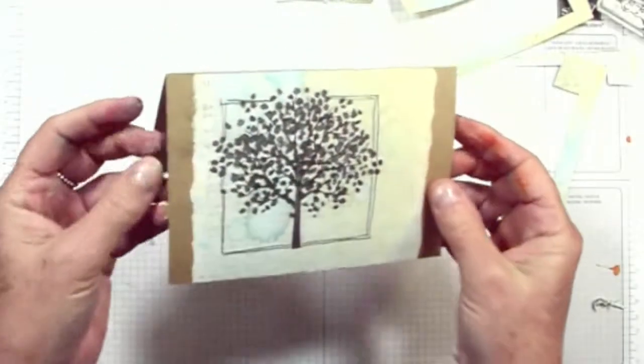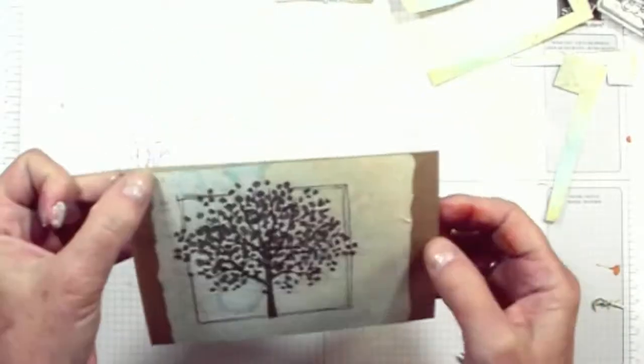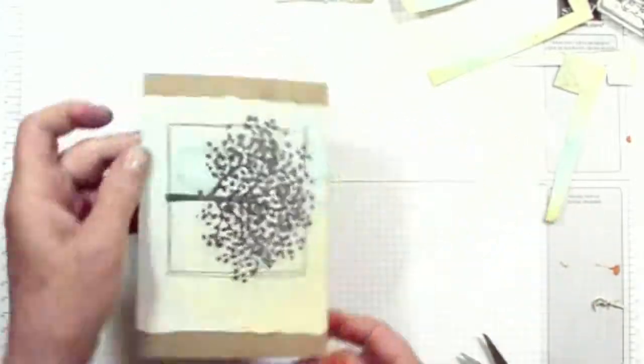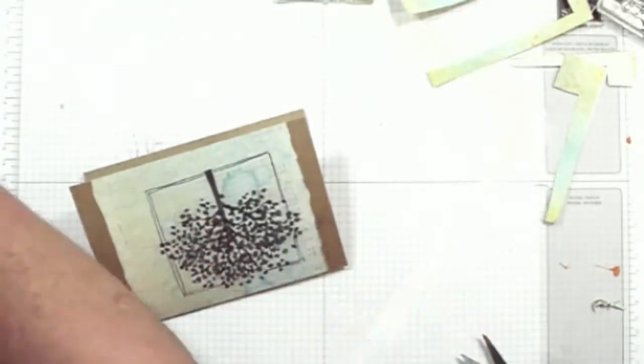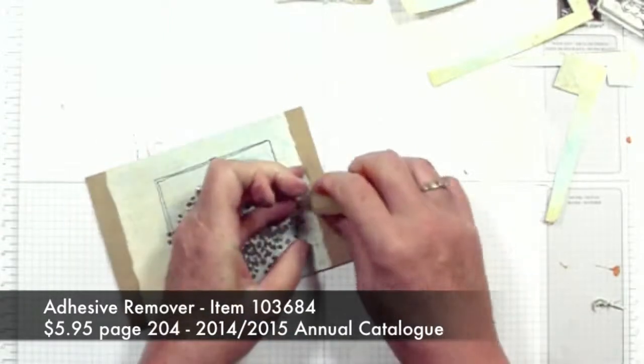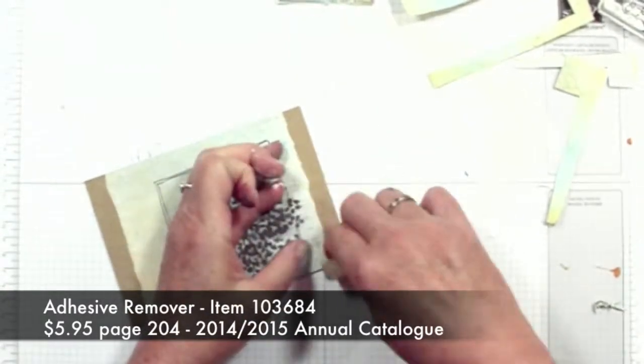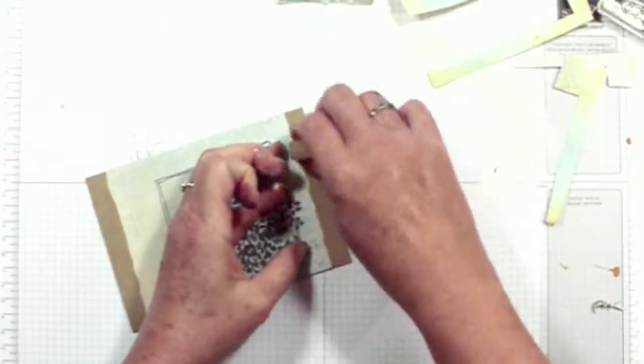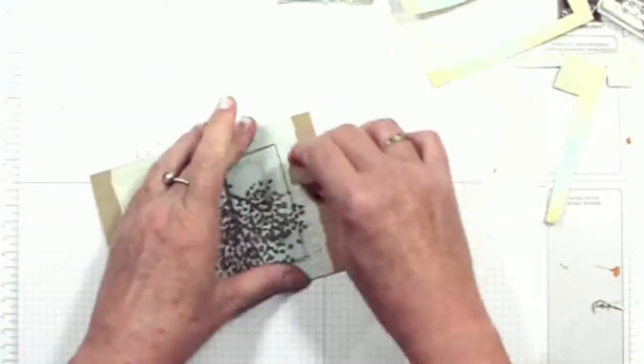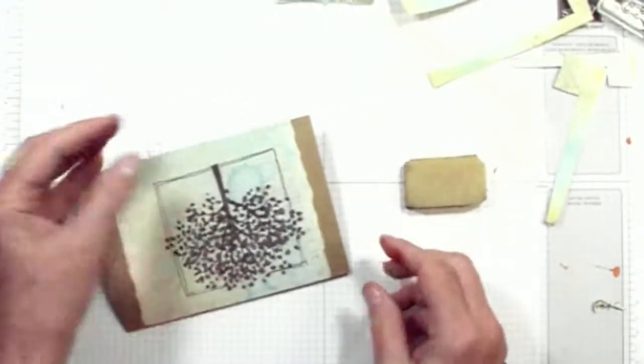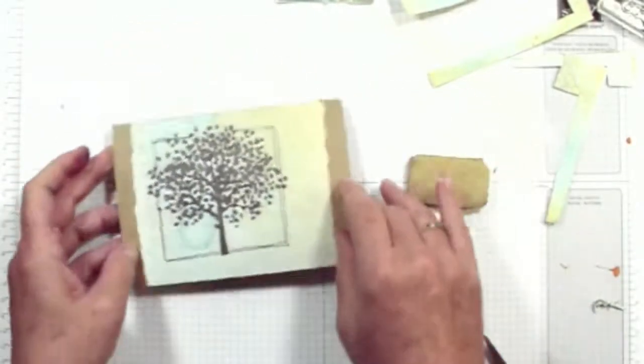Now if you find that you've got any little bits lifting, just apply a little bit of glue underneath. And you can see I've got some black marks on here. A little trick here is if you've got one of these glue removers, just wipe it over the top. And that removes any glue that's come out the edges. That's picked up any of the ink off my fingers. You can see that's all gone from the edge there.